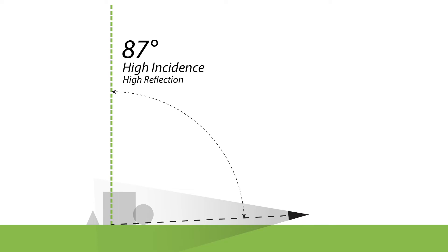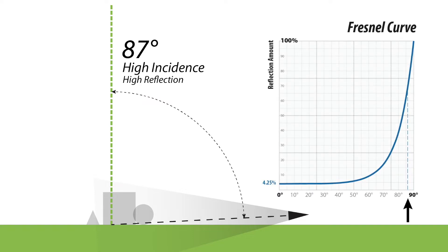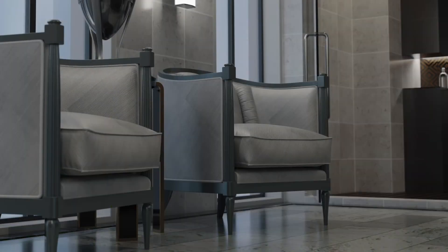A high incidence angle means you as the viewer are down close to the surface, looking at a far angle to where your line of sight intersects that surface. We draw a line perpendicular to that surface and measure the angle between them. In this case I could measure it as an 87-degree angle — a very high incidence angle — meaning it's going to be a highly reflective surface from our line of sight. At 87 degrees on the Fresnel curve, we're going to have nearly 70% reflection.